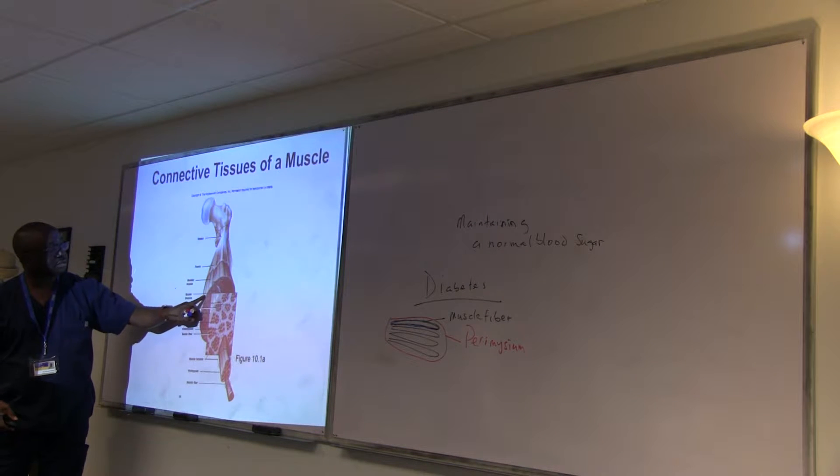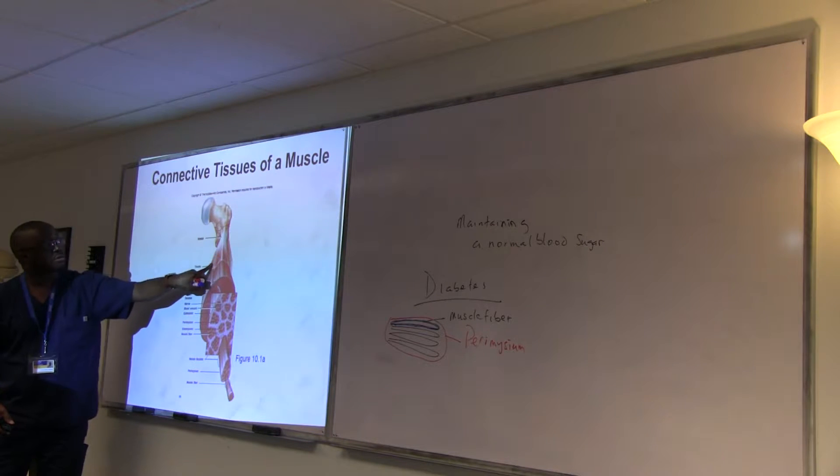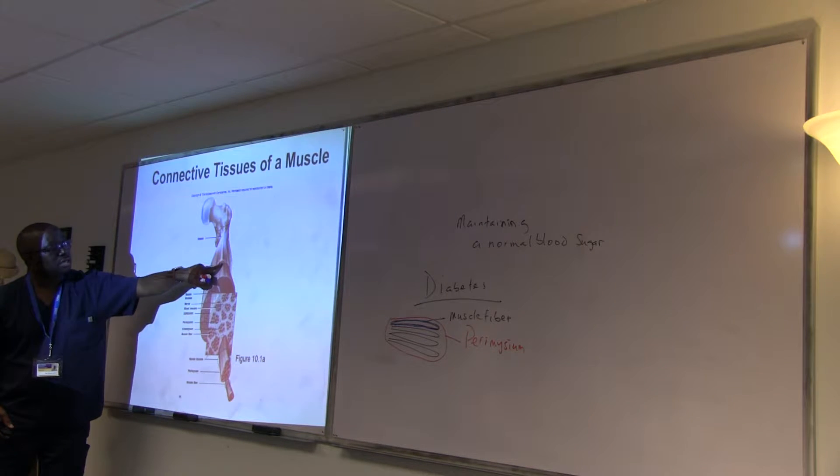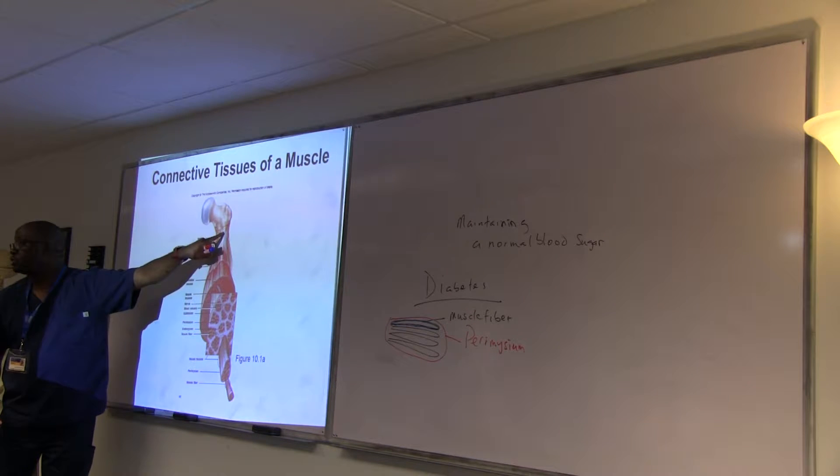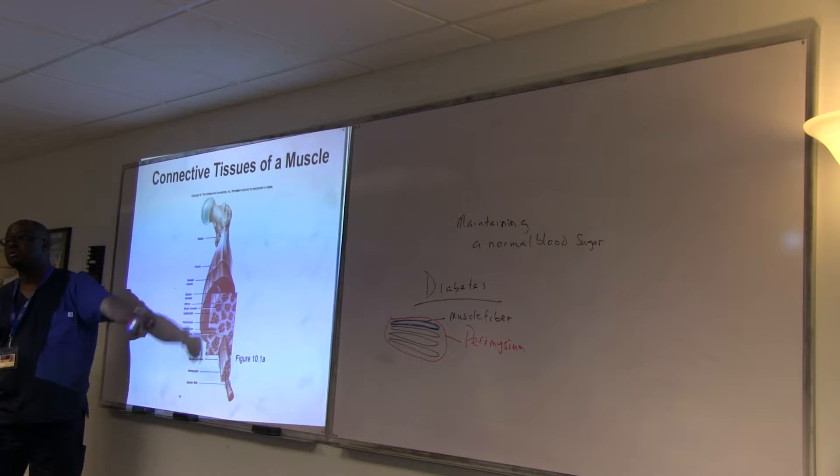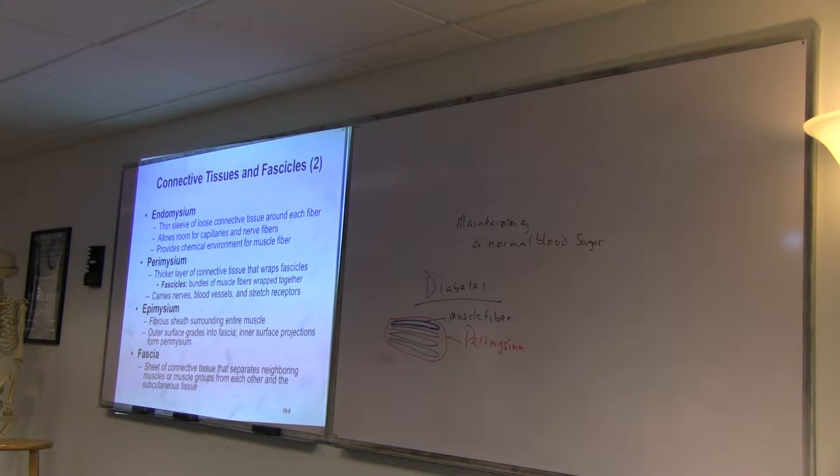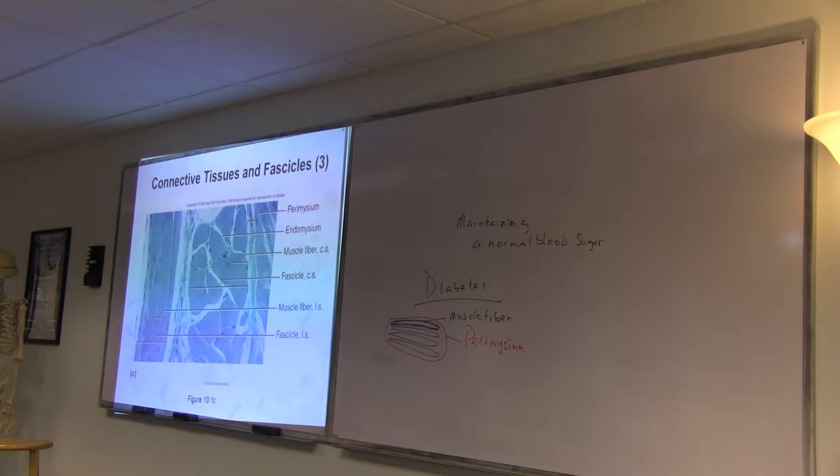The fascia eventually becomes the tendon. Look at it. This is the epimysium. Eventually it becomes, we have, becomes the fascia, or the fascia somehow lies on it. This eventually becomes what? The tendon, which joins the bone. So that's the epimysium. Surrounds everything, becomes the tendon.